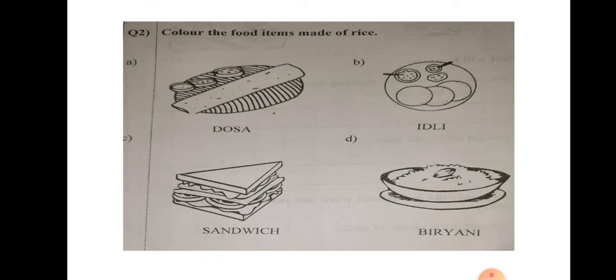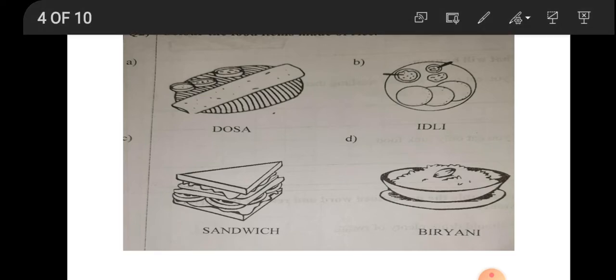Question number 2. Colour the food items made of rice. See, 4 food items are given to you: A, B, C, D. Out of this, you have to find out which food items are made of rice. Yes, of course it is dosa.